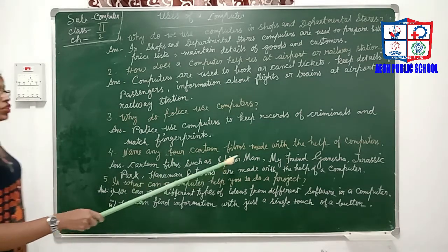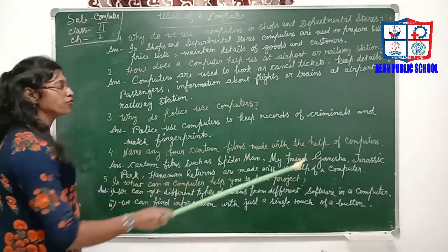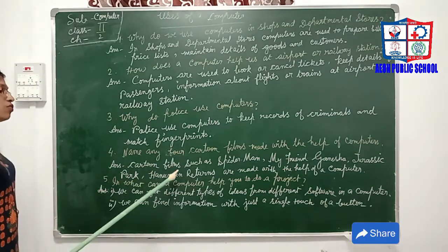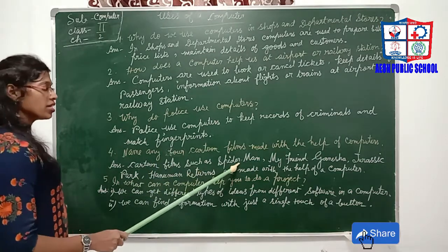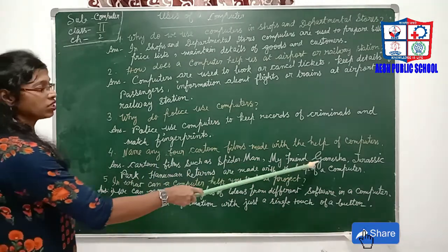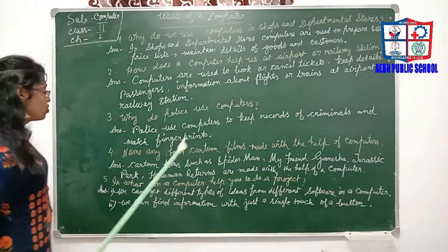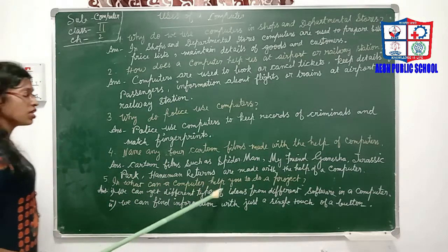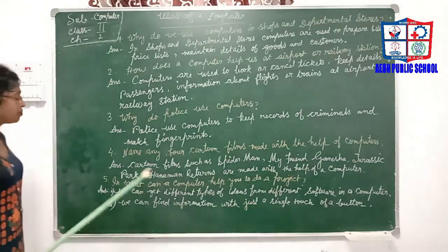Question 4: Name cartoon films made with the help of computers. Cartoon films such as Spiderman, My Friend Ganesha, Jurassic Park, and Hanuman Returns are made with the help of a computer.